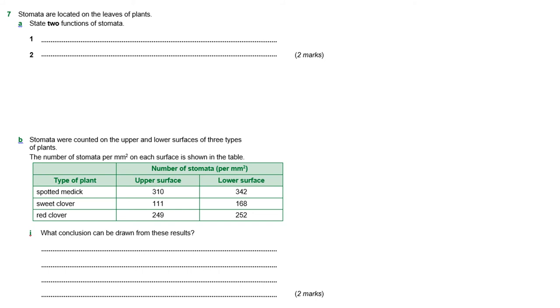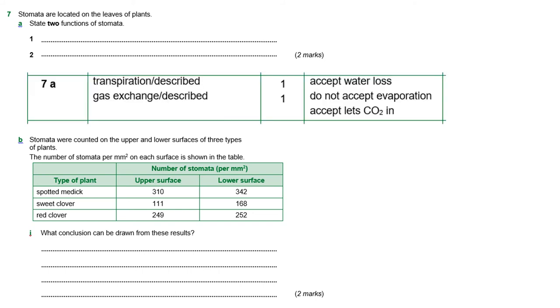Okay, so we're looking at the stomata now on the leaves of plants. So it wants two functions of stomata. They are required for transpiration because the water has to leave the plant through them. So it says you can accept water loss. So they need to be there so that the transpiration stream can happen. But they're also required for gas exchange. It says slash described for both of those. So if you've described transpiration, which is the movement of water through the plant and out of the leaves, that gives you your mark. If you've explained gas exchange and talked about carbon dioxide and oxygen being exchanged in and out of the leaves, remember during the day it's mainly oxygen coming out and carbon dioxide coming in. At night the process does reverse and you get the oxygen coming in and the carbon dioxide going out, because even when there's no light the plant needs to carry on respiration.